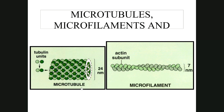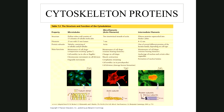Here are images of a microtubule — a hollow tubule — and a microfilament showing a double helix of actin molecules. Together with intermediate filaments, they determine cell shape; microtubules and microfilaments are additionally involved in cell motility.